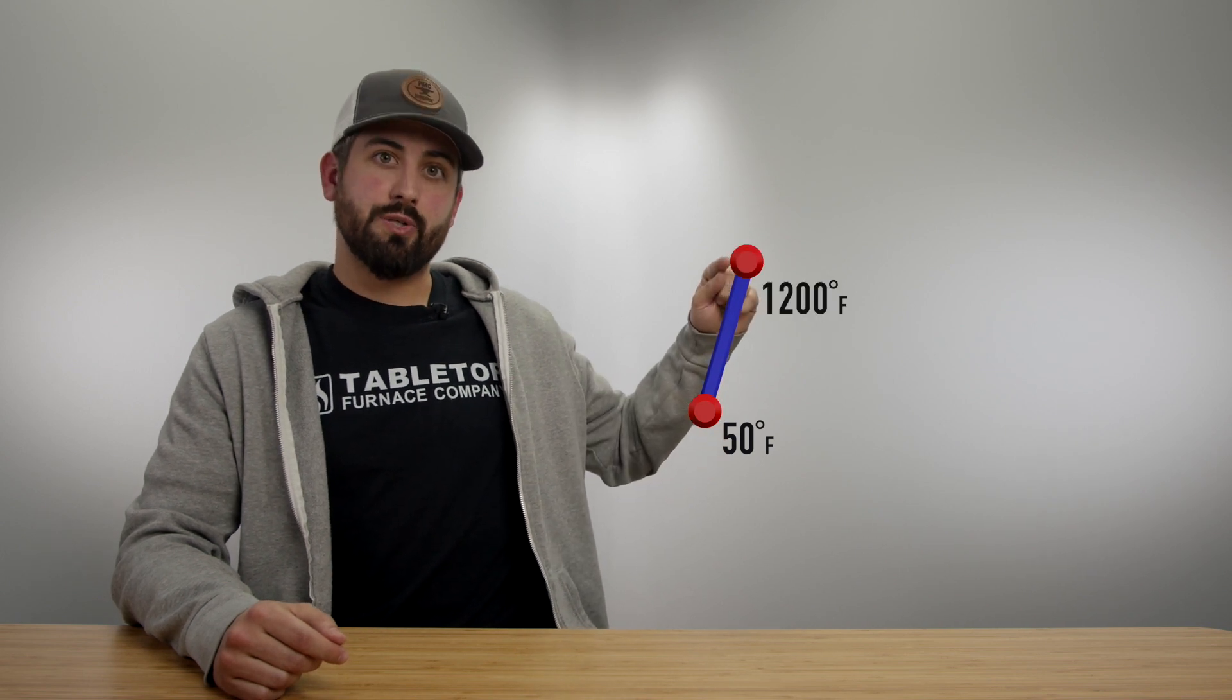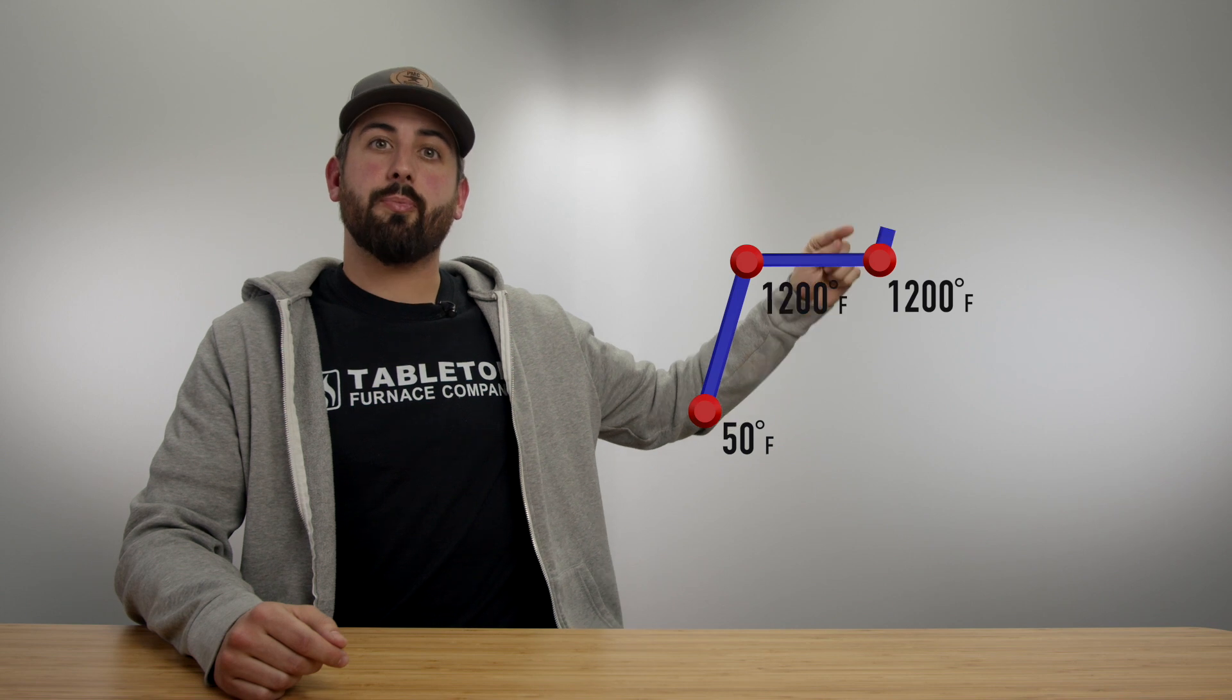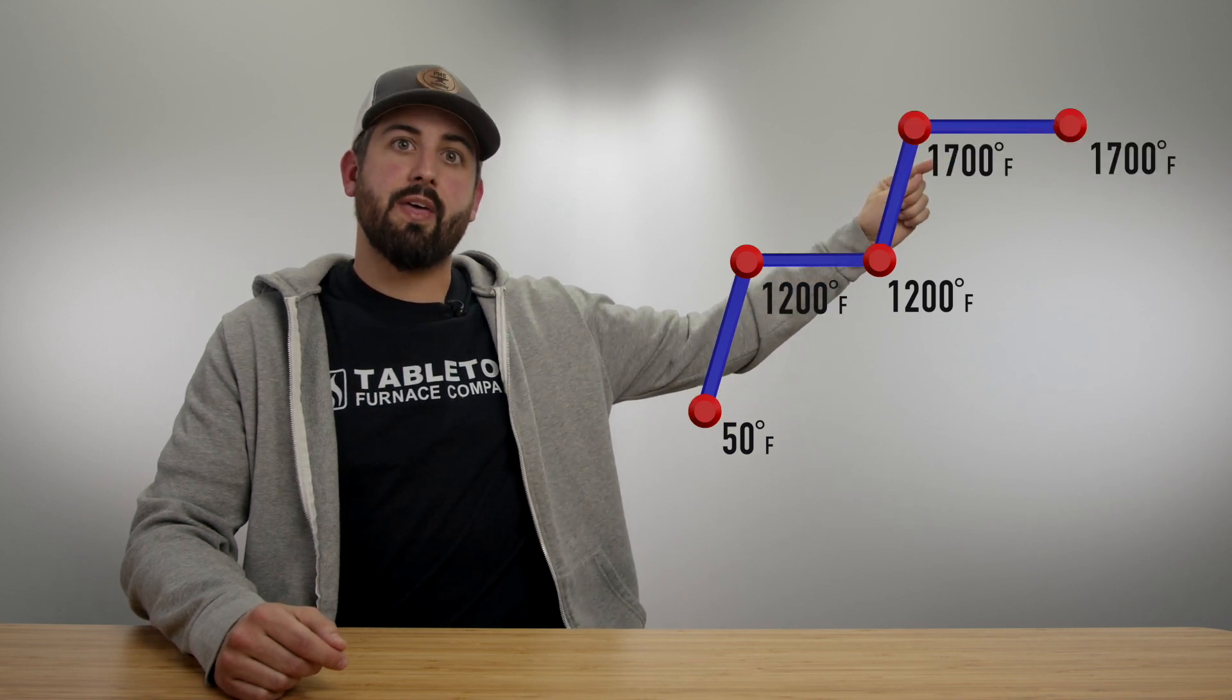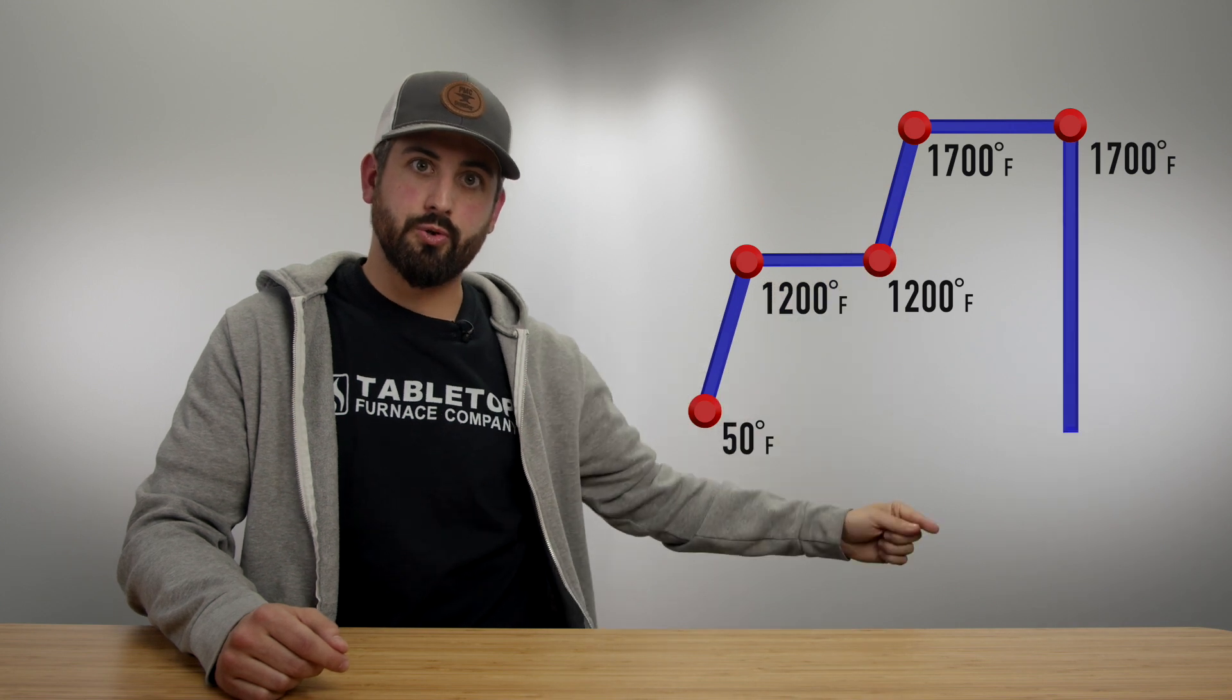Your burn-off schedule is going to look something like this. We're going to have a start temperature. We're going to rise up to our first target temperature at which point we're going to hold, then we're going to rise up again to another temperature. We're going to hold there again for a little while and then when we're all finished we're going to cool down naturally.